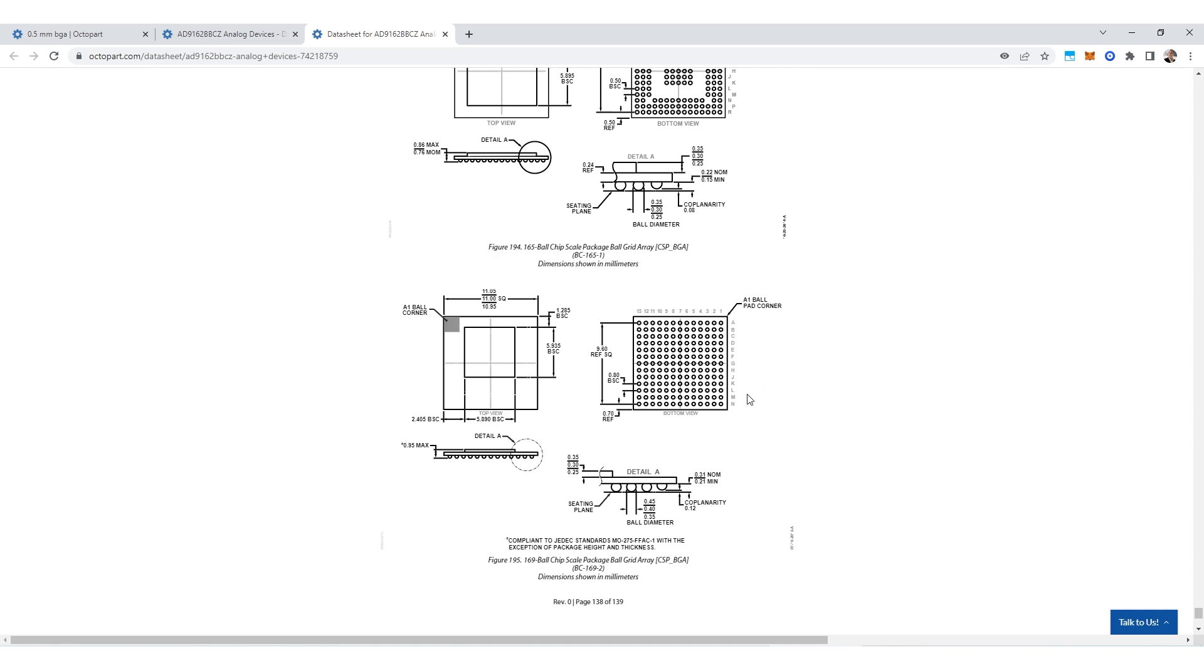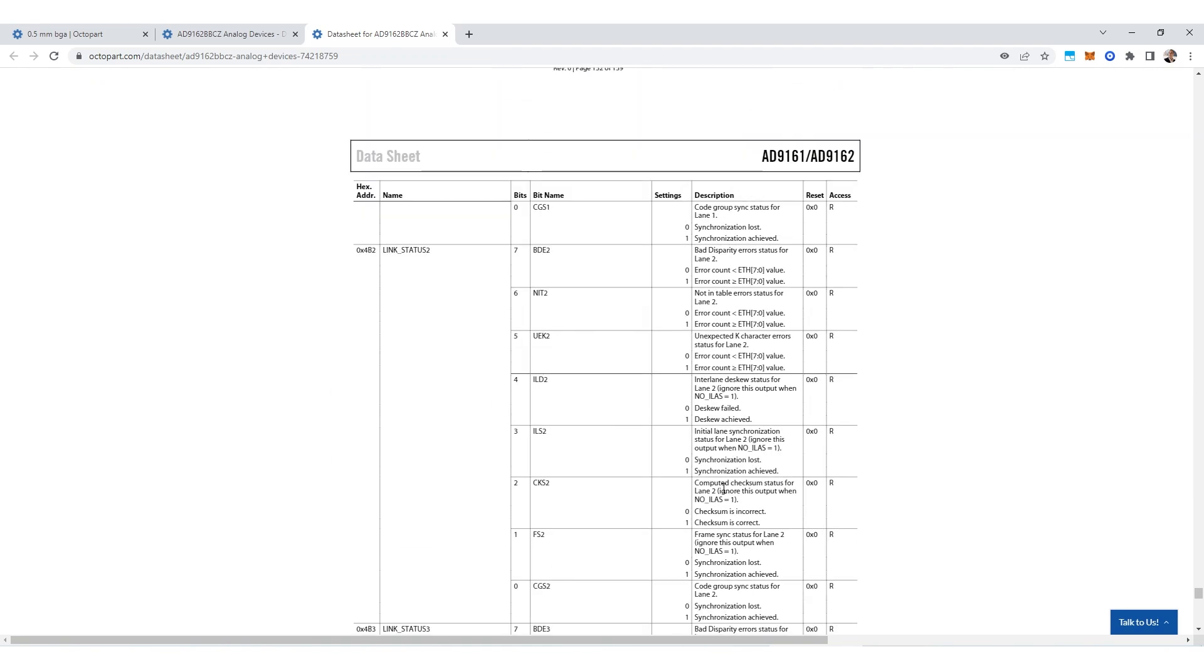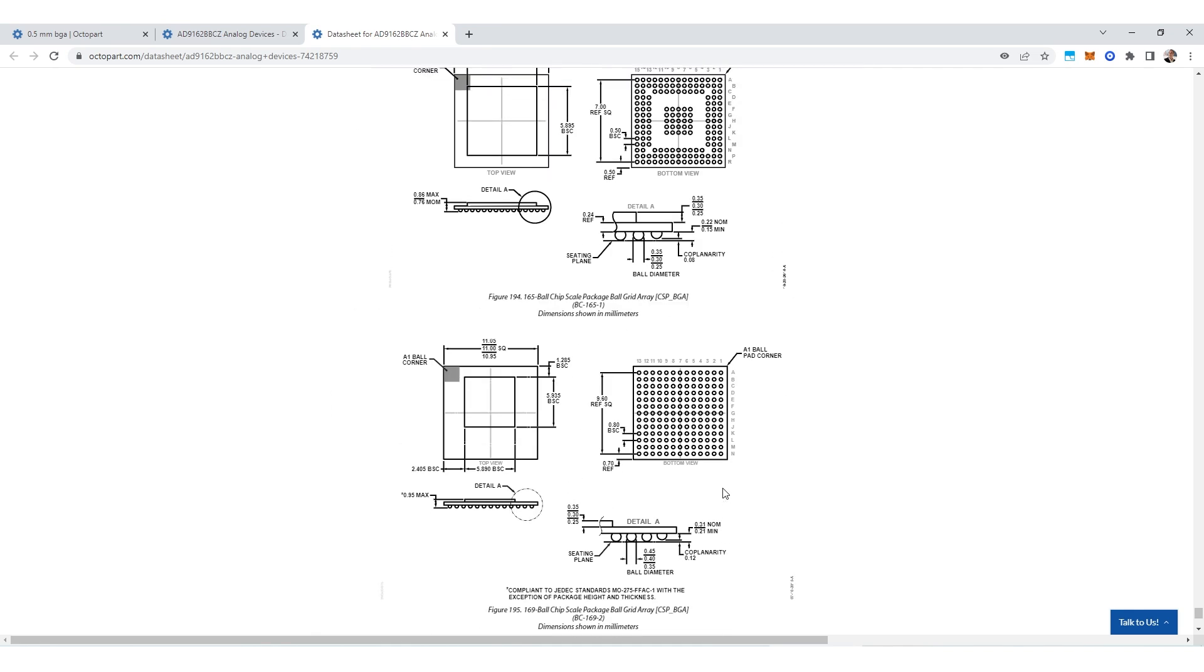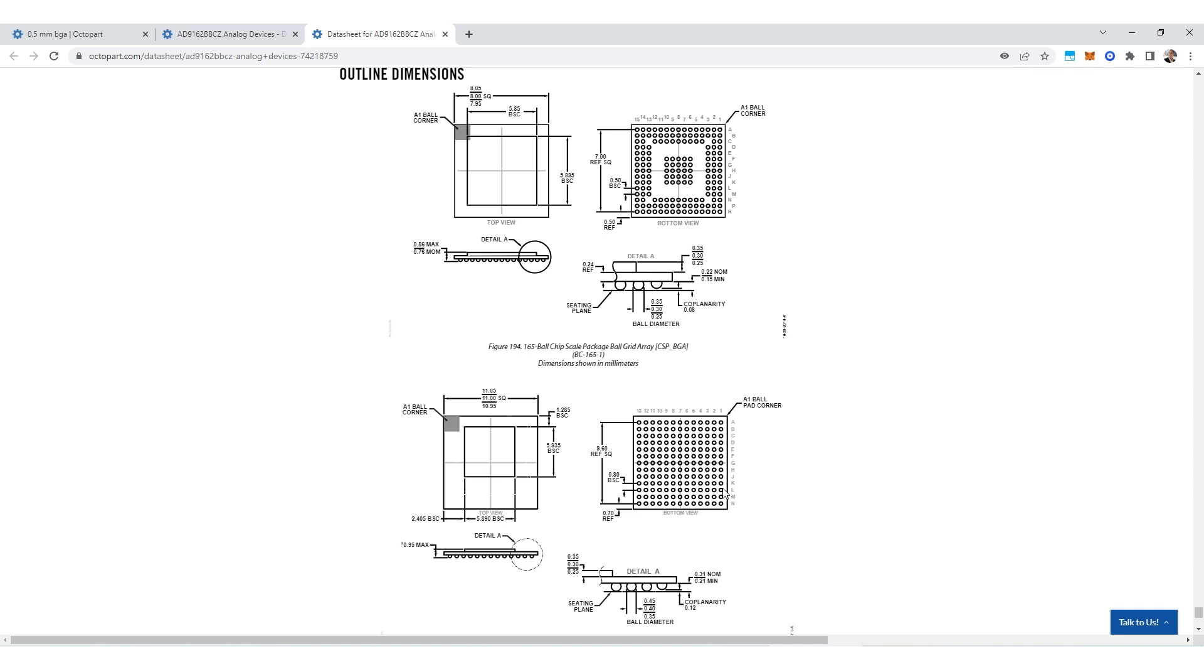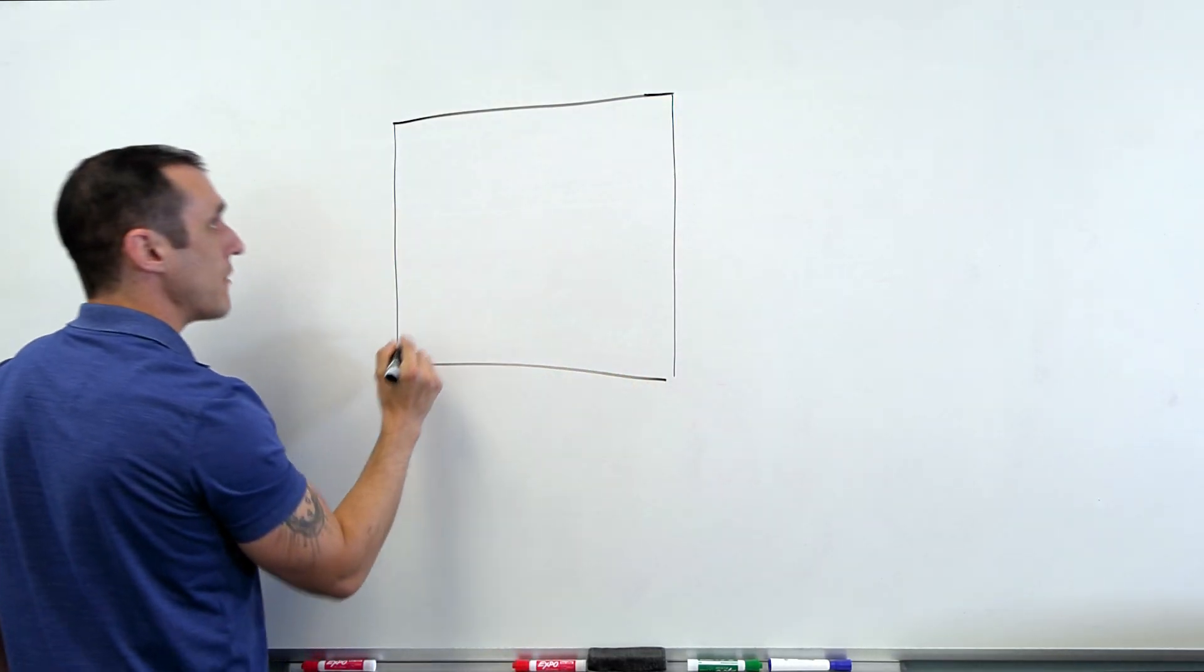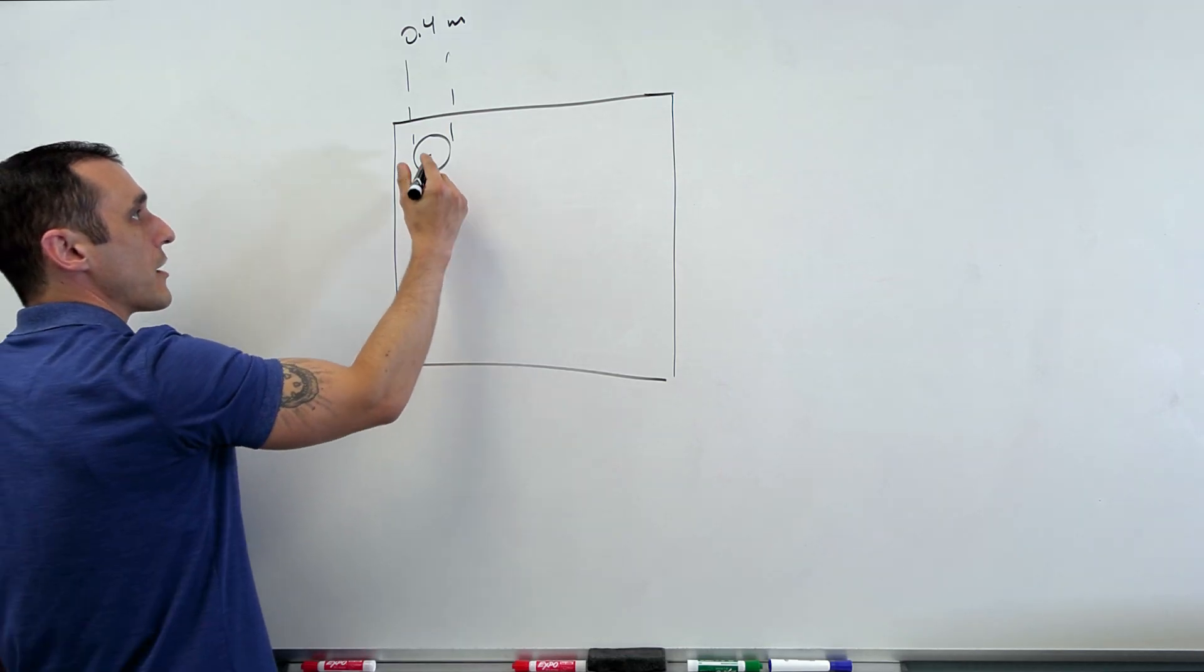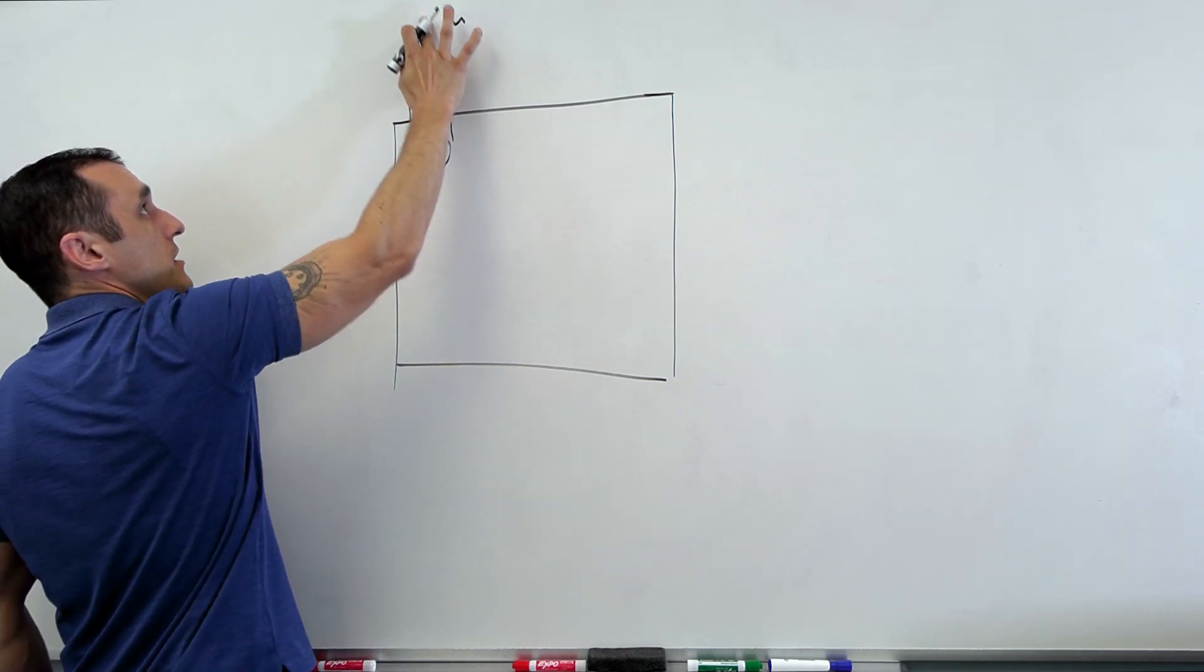So that just kind of gives you an example of the different components that can have these really fine pitches and might require via in pad. If we scroll down here, this data sheet is pretty long, but if we scroll through here and we eventually look at the ball out, you'll be able to see what the ball pitch is, what the ball size is, and then they may even give you an example land pattern. We did a previous example where we looked at what the land size needs to be for different ball pitches. And we're going to go ahead and link to that video in the description, but that will give you some insight as far as how large you need to make the landing pads for this BGA footprint in order to ensure manufacturability and assembly.